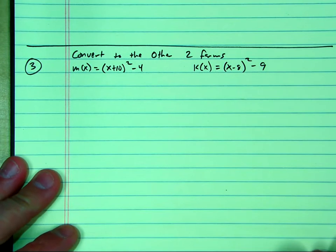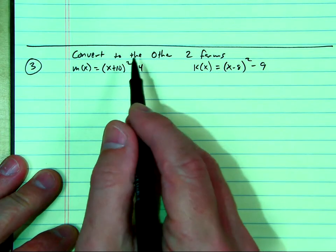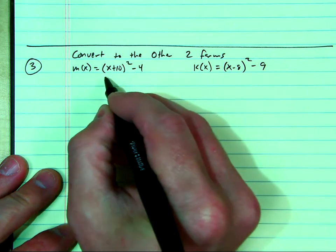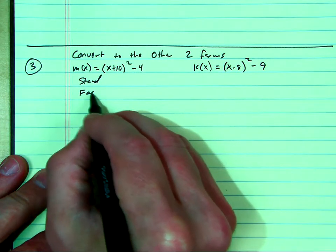Now we're going to do the same thing. We're going to convert into the other two forms, but this time I'm given vertex form first. So this is vertex form. You've got to multiply it out to get to standard form, and then you've got to factor it to get to factored form.